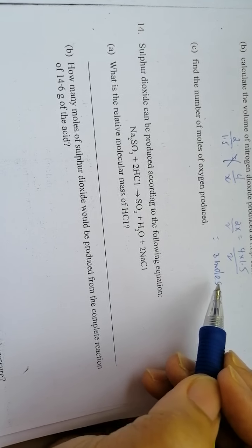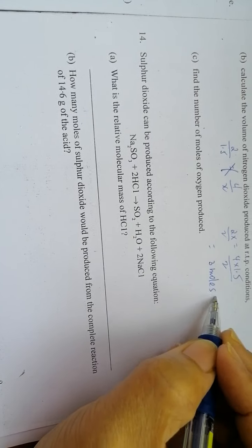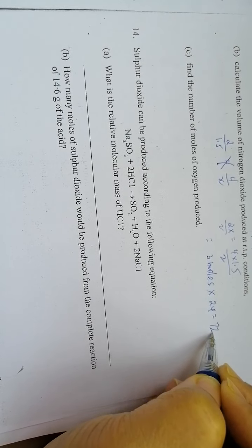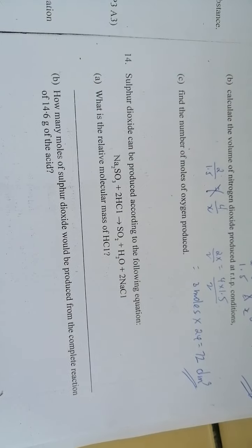We know that 1 mole is 24 dm cubed. That's constant. So if 3 moles, then we multiply by 24 which equals 72 dm cubed.